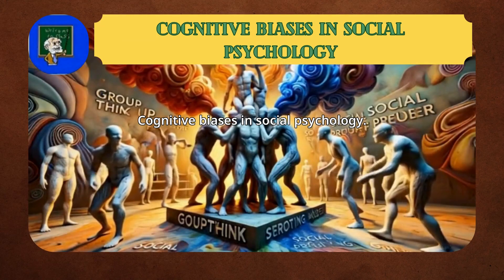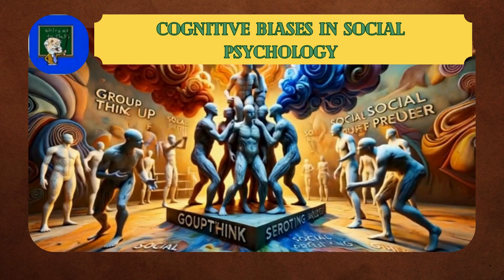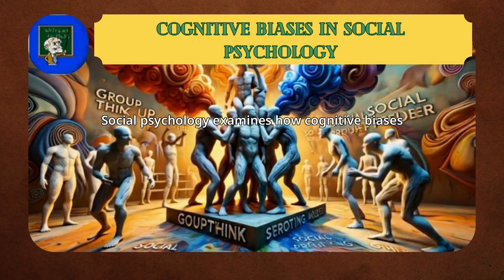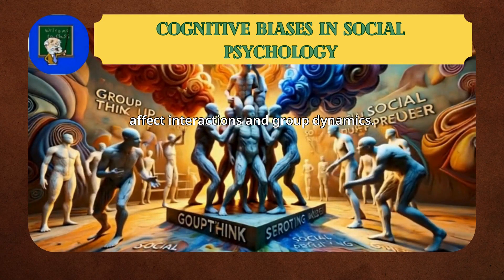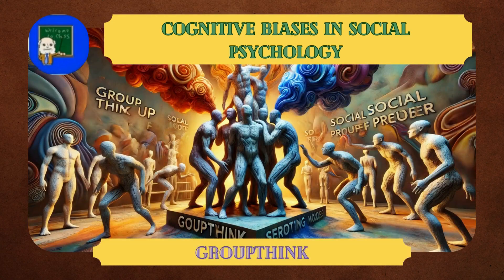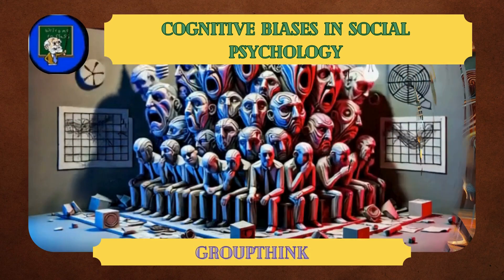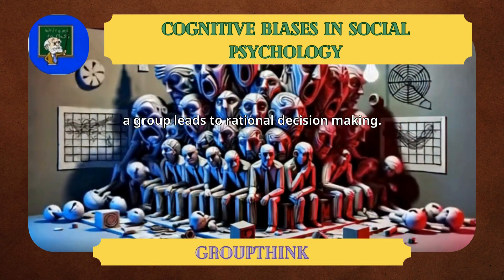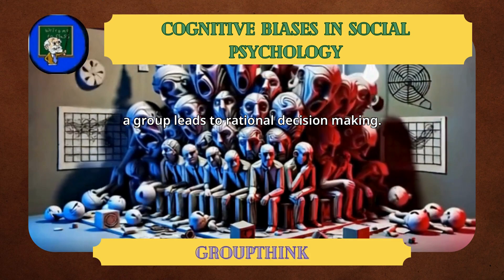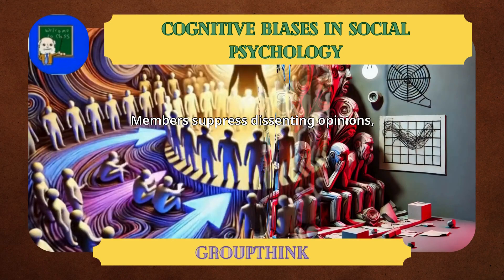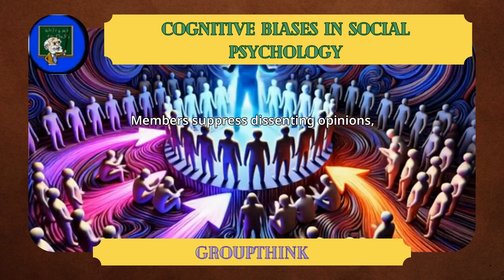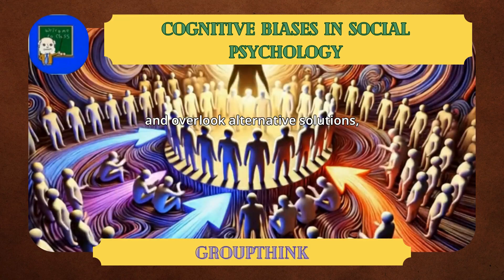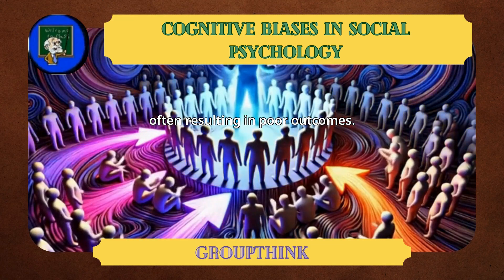Cognitive Biases in Social Psychology: social psychology examines how cognitive biases affect interactions and group dynamics. Groupthink occurs when a desire for harmony within a group leads to irrational decision-making. Members suppress dissenting opinions, prioritize consensus, and overlook alternative solutions, often resulting in poor outcomes.